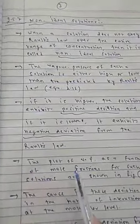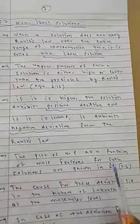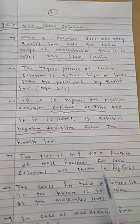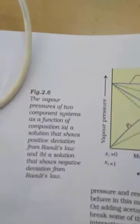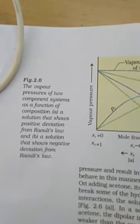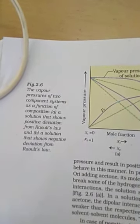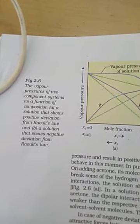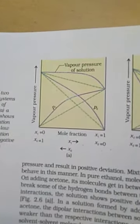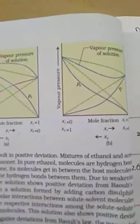The plot of vapor pressure as a function of mole fraction for such solutions is shown in Figure 2.6, on page number 48 of the textbook. You can see the vapor pressure of a two-component system shown as a mixture — one curve shows positive deviation from Raoult's law and another shows negative deviation.